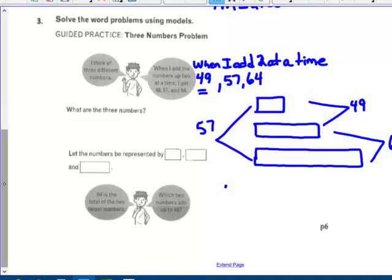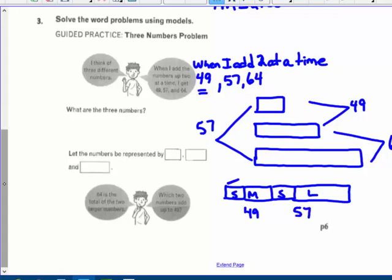So small plus medium must equal 49. Small plus large is 57, and large plus medium is 64. So small plus medium plus small plus large, small, medium, small, and large. Well, that's 49 and 57, and if I add that all together, I've got 106, right?